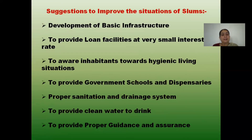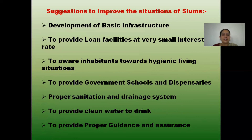However, we can remove these problems. The government, if it wants, can address this. First of all, for all the people living in slums, the government should provide at least basic facilities — a place to live and food — and should arrange for pucca (permanent) housing for them. The government can also provide loan facilities at very low interest rates so that even if they have a little money, they can build a good permanent house.